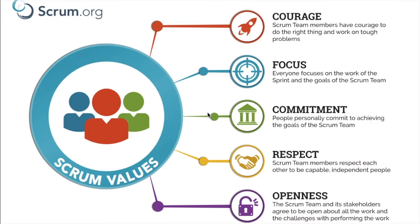The second value is focus. Everyone focuses on the work of the sprint and the goals of the Scrum team. Every sprint has a defined sprint goal, and all members of the team know that goal. To achieve it, every member needs to focus on their part — if something within the sprint is not done, the whole team fails to achieve the sprint goal. All team members need to focus on their bit so they can achieve the sprint goal together.